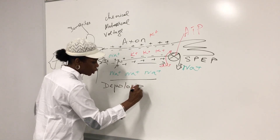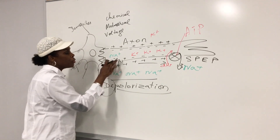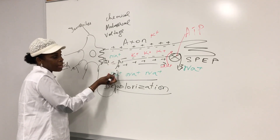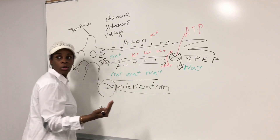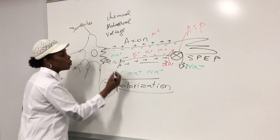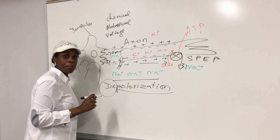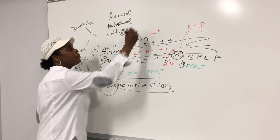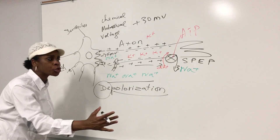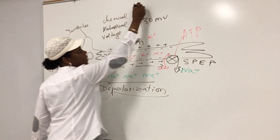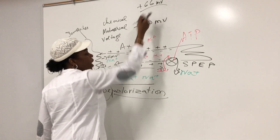Depolarization — the cell used to be polarized: negative inside and positive outside. The sodium coming into the cell makes it positive; it removes the polarity. It will continue moving in until the resting membrane potential that used to be negative 70 millivolts will change to positive, up to positive 30 millivolts. When it gets to positive 30 millivolts — getting closer to the equilibrium potential of sodium, which is plus 66 millivolts — all the gated sodium channels will close. The gate closes at 30 millivolts and doesn't quite reach 66.